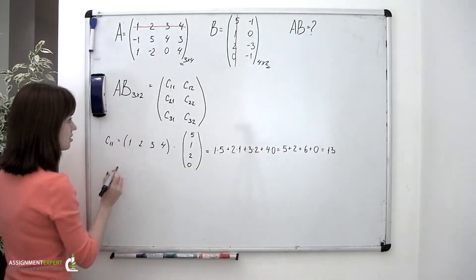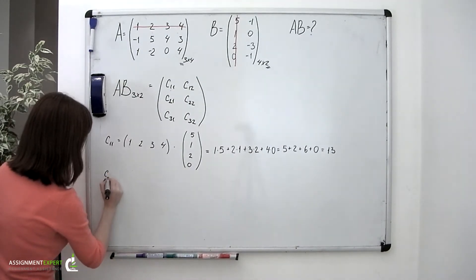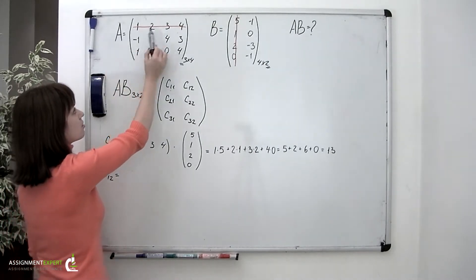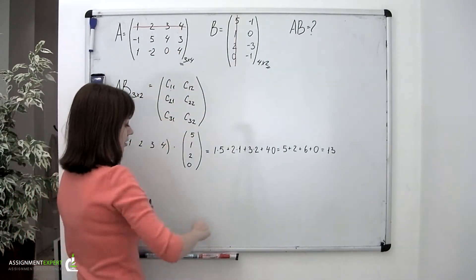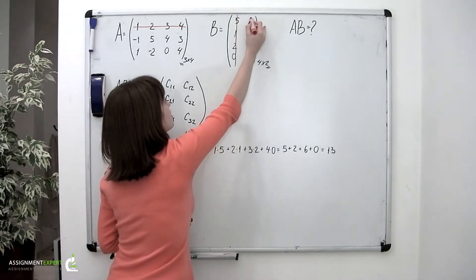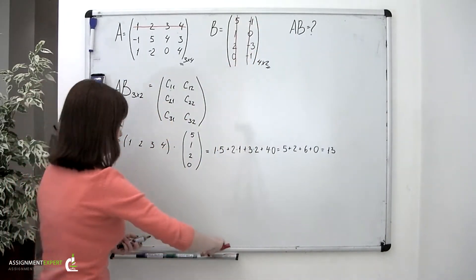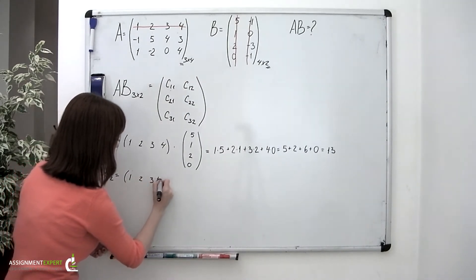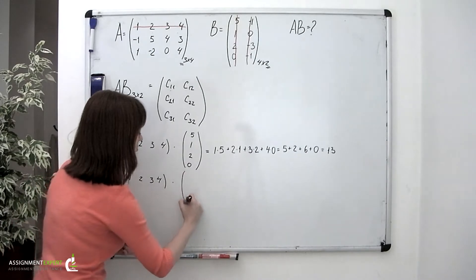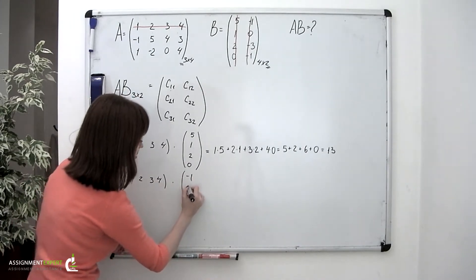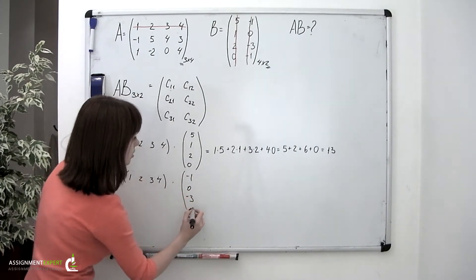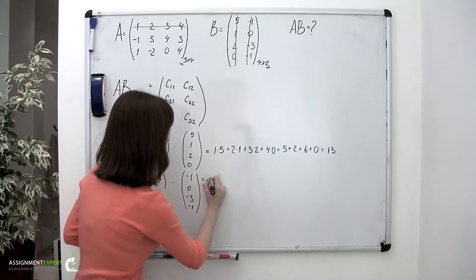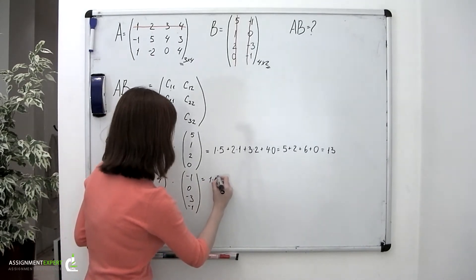Now for the element C sub 1,2, we'll take the first row of the first matrix and multiply it by the second column of the second matrix. So we'll have 1, 2, 3, and 4, multiplied by the second column: negative 1, 0, negative 3, negative 1.